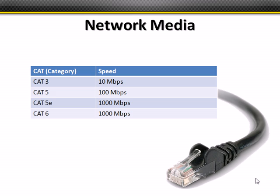With network media, we have different categories of cabling. What you see in the graphic is a twisted pair CAT5 cable, very typical in a modern Ethernet network. CAT3 is a 10 megabit per second cable not used in modern networks — it's too slow. You may find it in older buildings, but we're going to focus on CAT5 and above. CAT5 has 100 megabit per second throughput. CAT5e supports 1,000 megabits per second, or gigabit. CAT6 is also rated for gigabit.